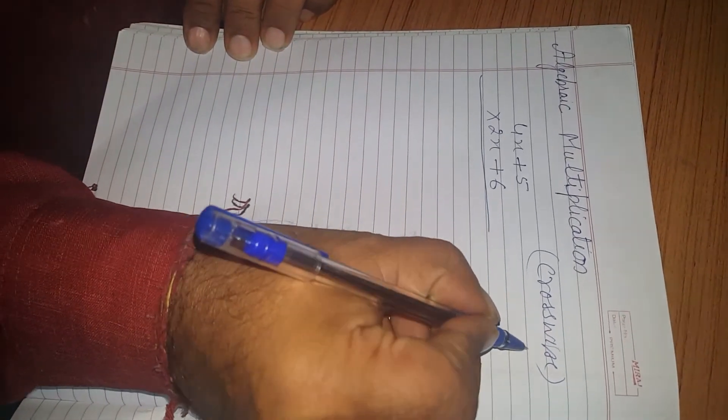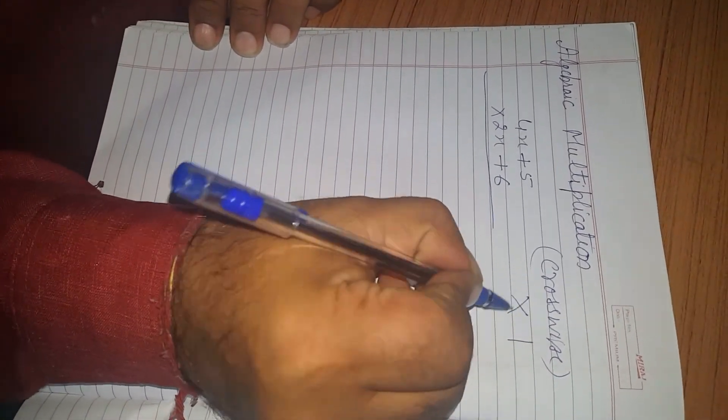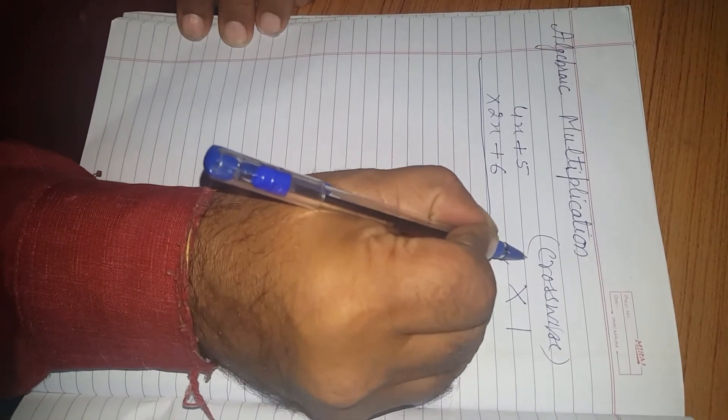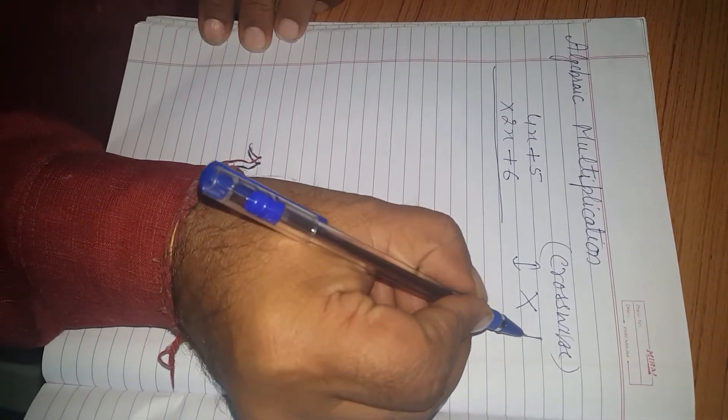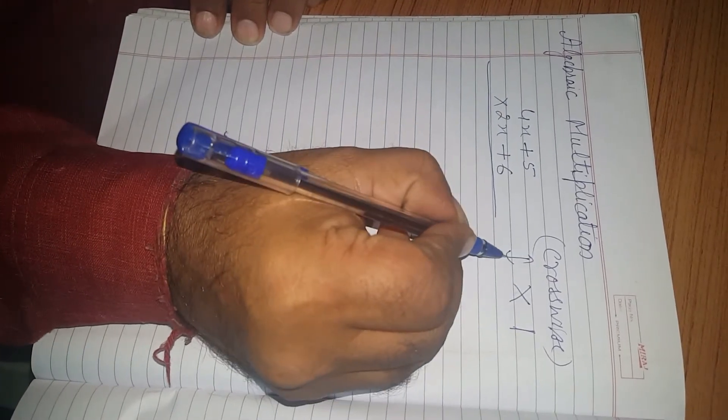How? The Sutra is Cross and Vertical Multiplication. There will be 3 steps. This is Vertical. This is Cross. This is Vertical.